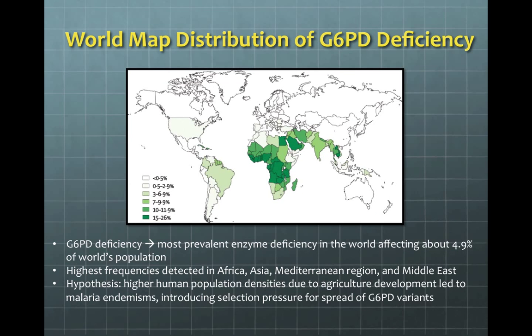Here you see a world map distribution of G6PD deficiency, which has been described as one of the most prevalent enzyme deficiencies in the world, affecting about 4.9 percent of the world's population. The highest frequencies are detected in Africa, Asia, the Mediterranean region, and the Middle East.